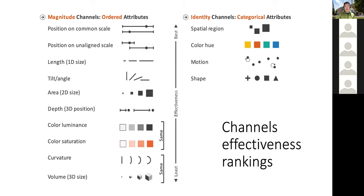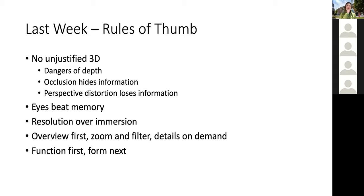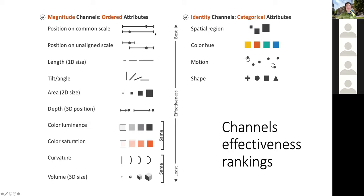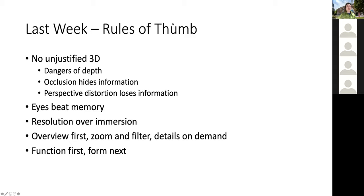That's essentially the fundamental task when you design a visualization: decide which attribute is most important, select the most effective channel for it, and then continue to the next attribute. We also went through some rules of thumb last week. These are guidelines based on experience — usually good things to do, but less strict than the ordered channel list. The channel list is almost always true, whereas rules of thumb are true in most cases.